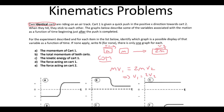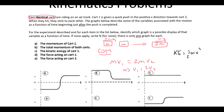Now if the velocity halves, remember kinetic energy is equal to half Mv squared. So if the velocity halves, the kinetic energy is going to be divided by 4. So let's have a look for those ones.